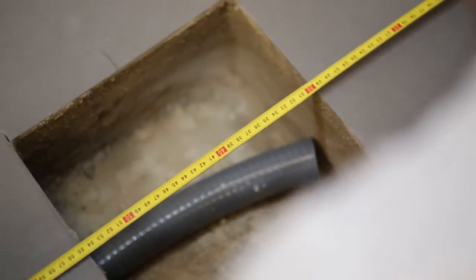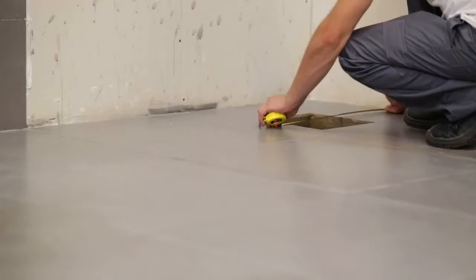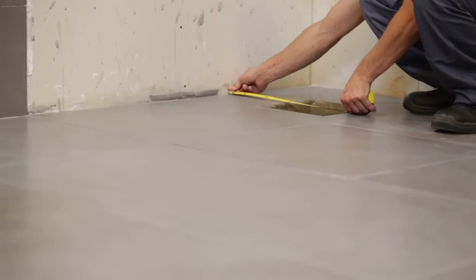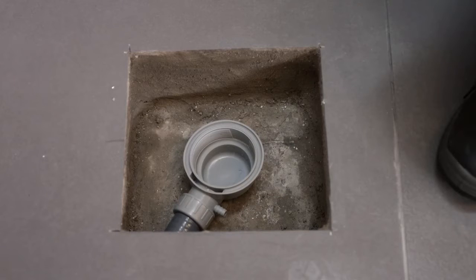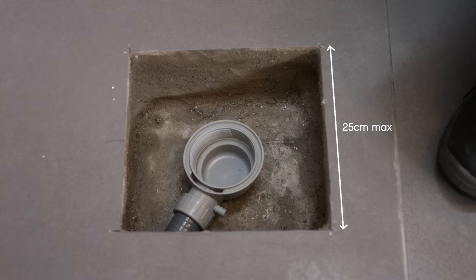If the shower tray is not yet available, request the technical characteristics from the distributor. Prepare a housing whose sides or diameter do not exceed 25 cm and whose minimum depth must be 7 cm for the horizontal outlet valve.